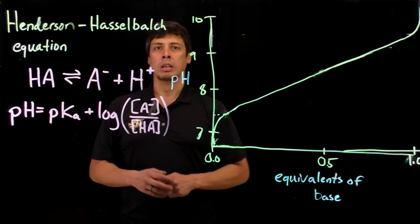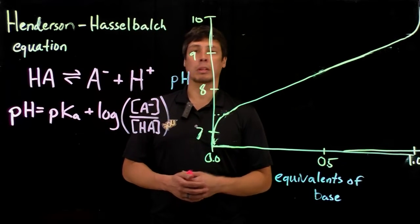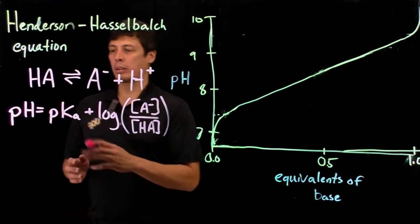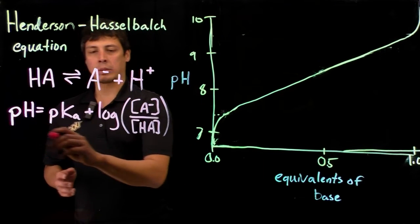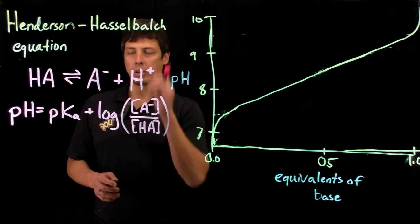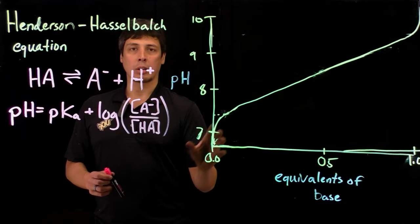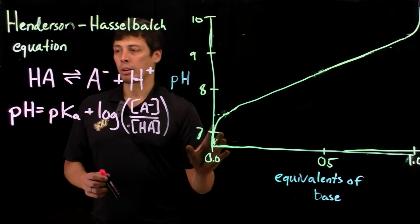For a weak acid, we can think of something like acetic acid. This is the equation here, and in another video you can see how this is derived and also how to draw titration curves.